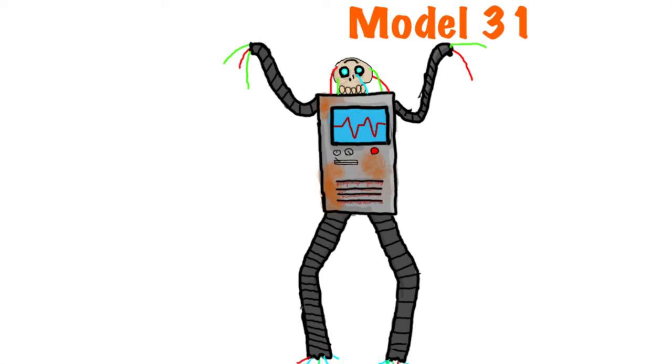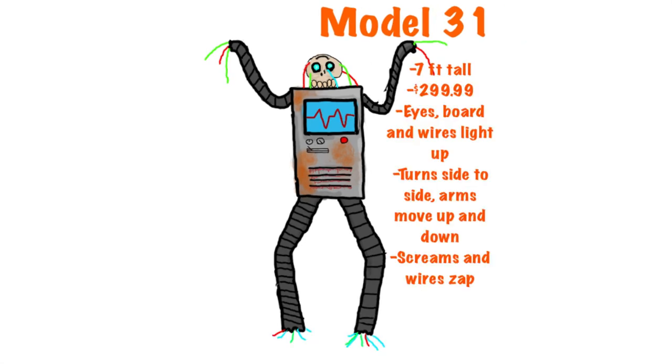But anyways, he is 7 foot tall, $300. His eyes, his board showing a heartbeat thing, and some of the wires light up. He turns side to side, the arms move up and down, and his audio is just screaming and zapping. He'd be pretty similar to Catacomb Creature, same animation. And I just think he'd be really awesome.